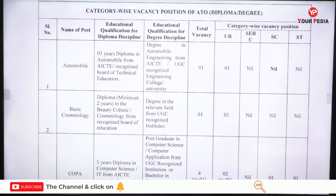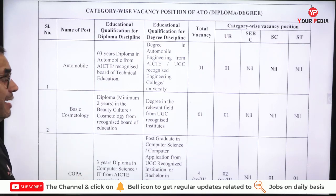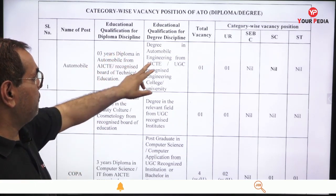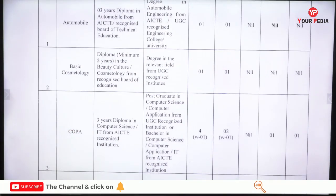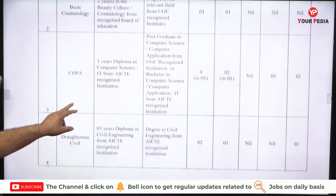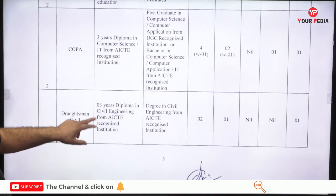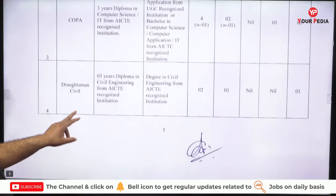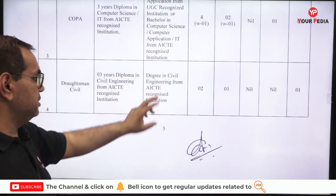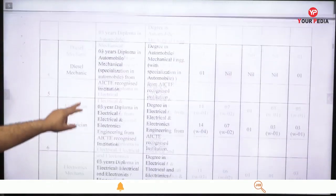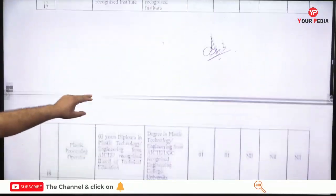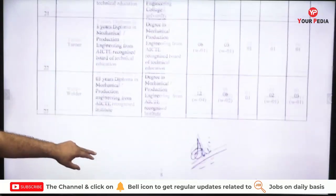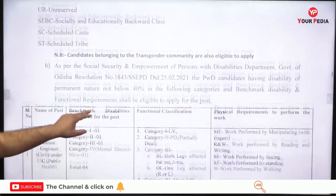For ATO category-wise vacancy for diploma and degree holders: Automobile requires a minimum three-year diploma or degree in Automobile Engineering — one vacancy. Basic Cosmetology requires a two-year diploma or degree in the relevant field. COPA requires a three-year diploma in Computer Science. Draftsman Civil requires a diploma or degree in Civil Engineering. Similarly, Diesel Mechanic, Electrician, Electronics Mechanics and other ITI trades are listed — read the full PDF for complete details.